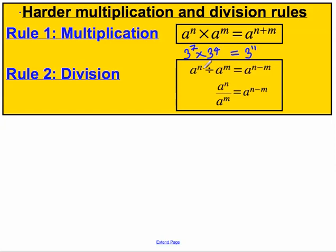which is 11. When dividing with the same base number, 3 to the power of 7 divided by 3 to the power of 4, we can simply subtract the indices. That would be 3 to the power of 3.